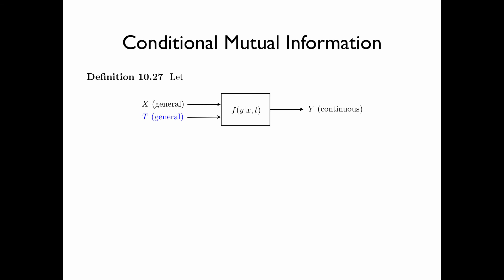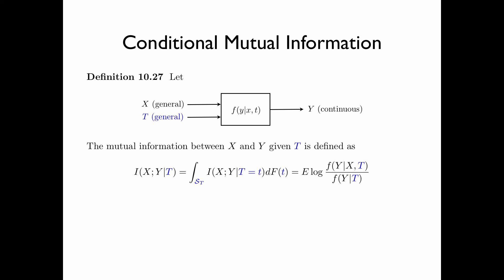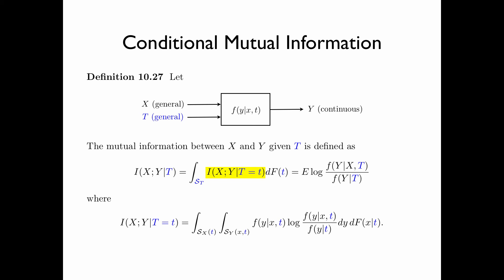We are now ready to define conditional mutual information. Let y be a continuous random variable obtained by passing two general random variables x and t through the channel f(y|x,t). Then the mutual information between x and y given t is defined as the expectation of log of f(y|x,t) divided by f(y|t). In integral form, this is the integral of I(X;Y|T=t) dF(t) over all t in the support of t, where I(X;Y|T=t) is defined in exactly the same way as mutual information between x and y except that everything is now conditioned on a particular t.